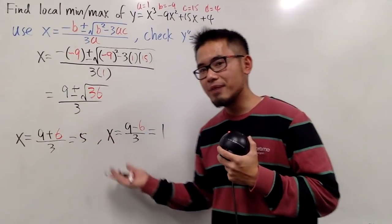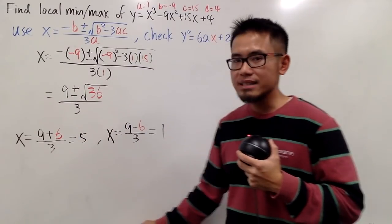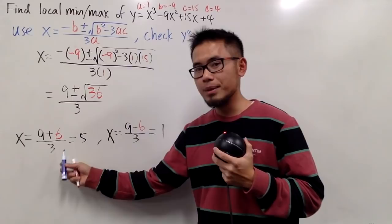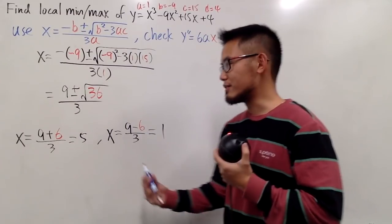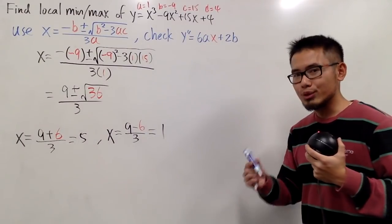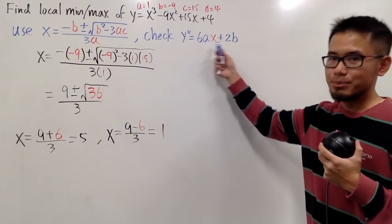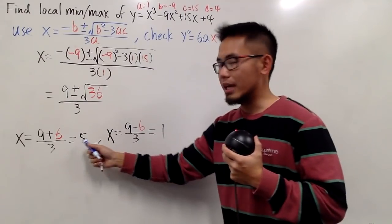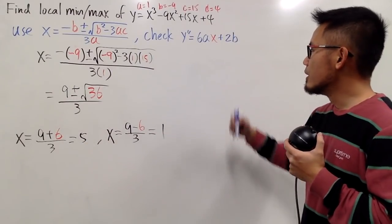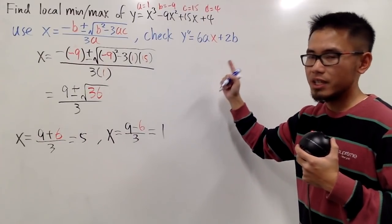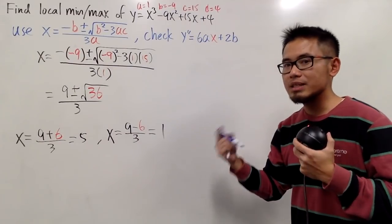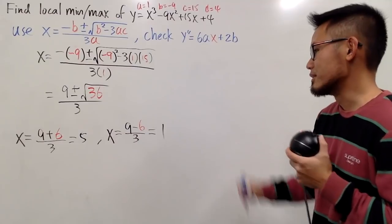As you can see, we have two X values. Now, let's decide if this is going to be a local minimum or local maximum, and vice versa. All we have to do is to check this expression for the X value. This is a second derivative. You are going to see if you get positive or negative second derivative, or maybe sometimes 0.